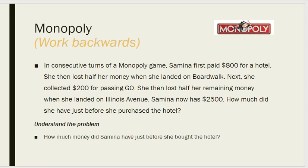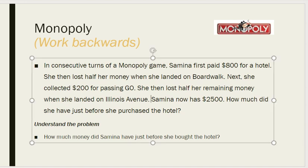This is the problem: Saminah gave money at the hotel, then her money got lost, then she got 200 rupees, then she did something else and her money got lost again. It is important to identify which values you have to add or subtract. Working backwards, we will start from where Saminah has 2500.